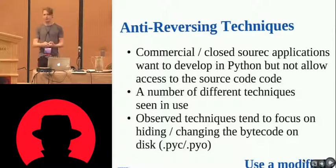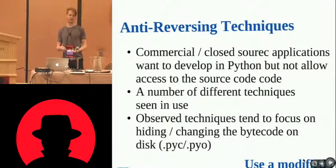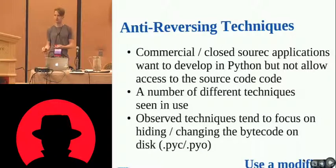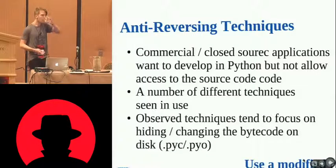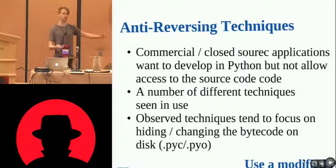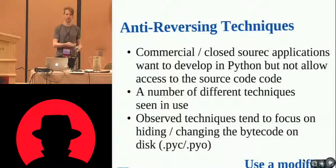So if that's all the reverse engineering tools that are available, obviously all the people authoring code can see what those tools are. What are the techniques they're using to stop people from reversing out their code? Commercial and closed-source applications want to develop in Python for the speed, ease, cost efficiency, and cross-platformness, but don't want everyone to look at their code. They've come up with an increasing number of techniques to stop you being able to peek at the code. A high-level observation: all the techniques we've seen really rely on trying to obfuscate the PYC and PYO when it lives on disk.